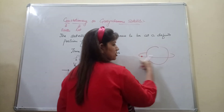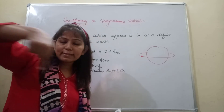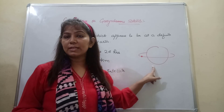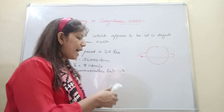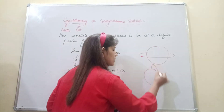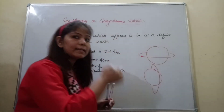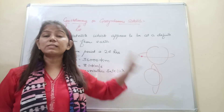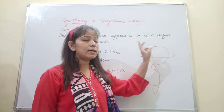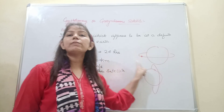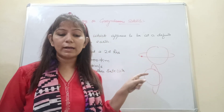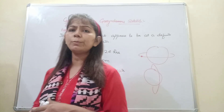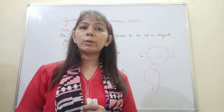If a satellite orbits in a horizontal position around the equator, it is known as an equatorial satellite. If the satellite orbits in a vertical position, it is known as a polar satellite. Polar satellites are used for remote sensing.